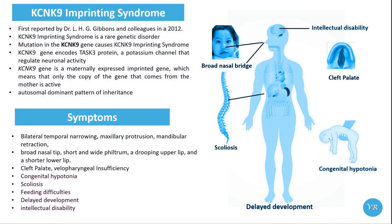Mutations in the KCNK9 gene can disrupt the normal function of the potassium channel, leading to altered neuronal excitability and the clinical features seen in KCNK9 Imprinting Syndrome. Loss of function and missense mutations are the most common types of mutations associated with KCNK9 Imprinting Syndrome.